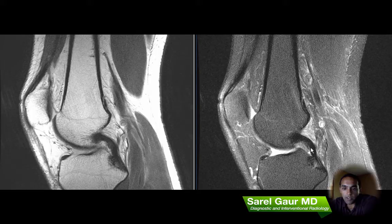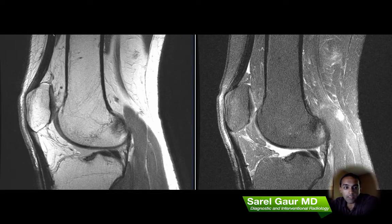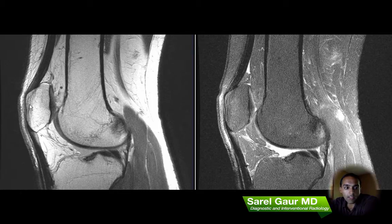No evidence of fluid or tearing on the fluid weighted sequence. So after we do the menisci and the cruciate ligaments, I then go to the extensor mechanism — basically the set of structures that become very tight when you extend the knee. Here is the quadriceps tendon inserting on the patella — no evidence of fluid or tearing on the fluid weighted sequence. And then the infrapatellar tendon is inserting onto the tibial tubercle. This is all intact and normal, no evidence of fluid or tearing.